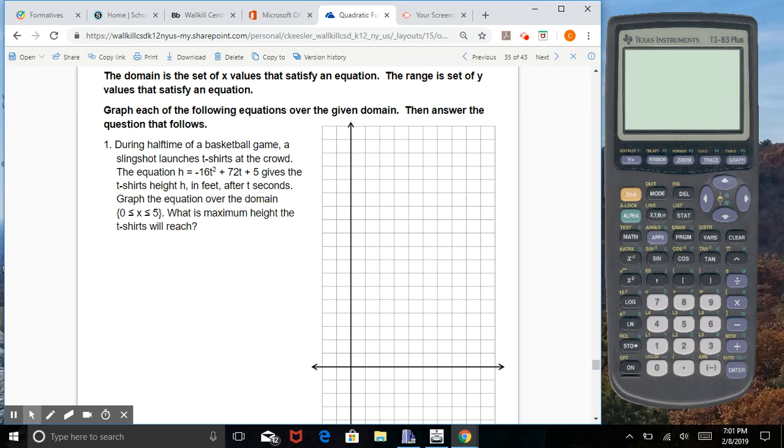I'm going to do the first problem with you. During halftime of a basketball game, a slingshot launches t-shirts at the crowd. The equation h equals negative 16t squared plus 72t plus 5 gives the t-shirt height h in feet after t seconds. Graph the equation over the domain 0 to 5. What is the maximum height the t-shirts will reach?